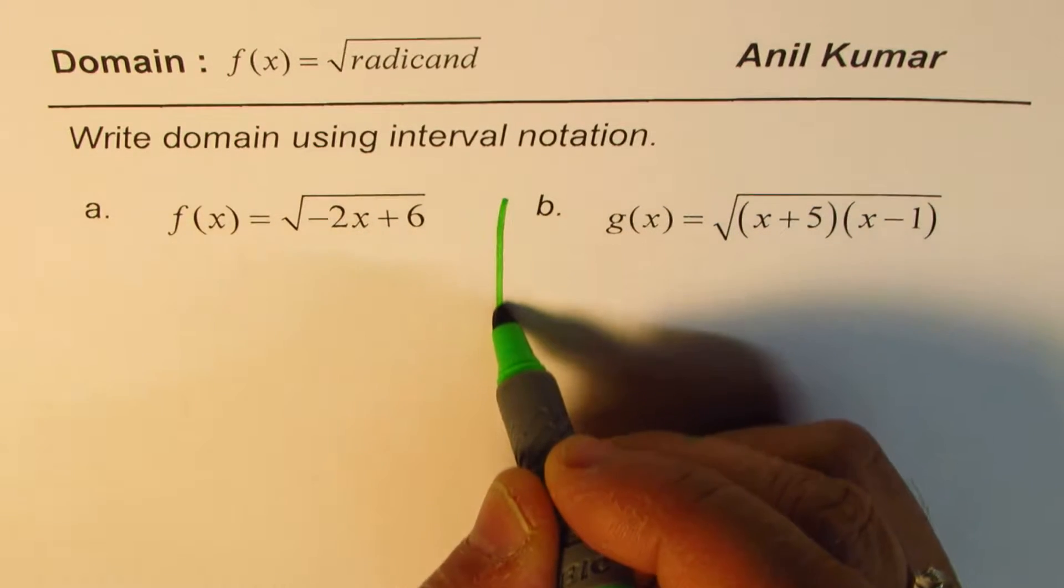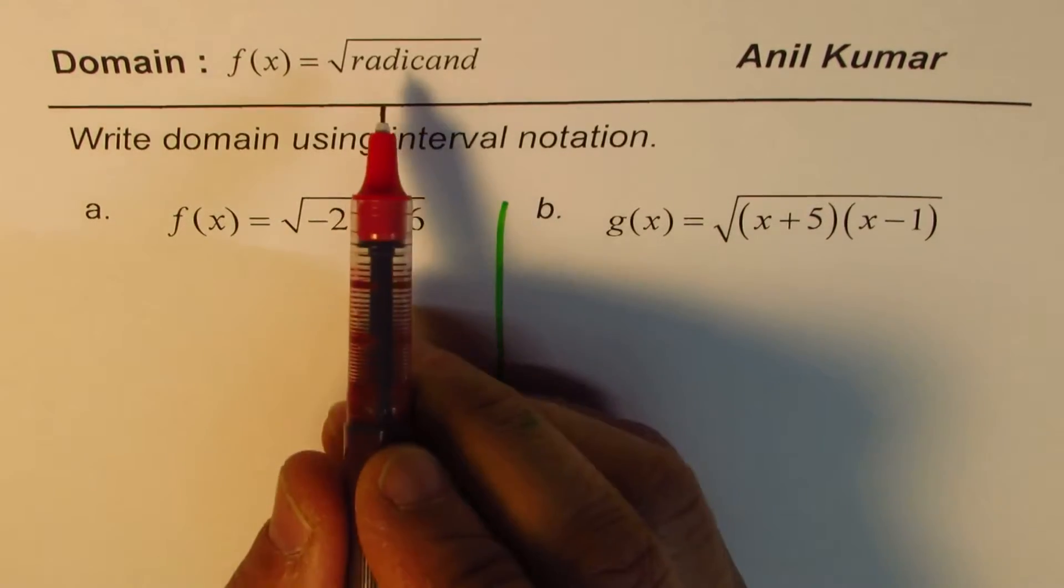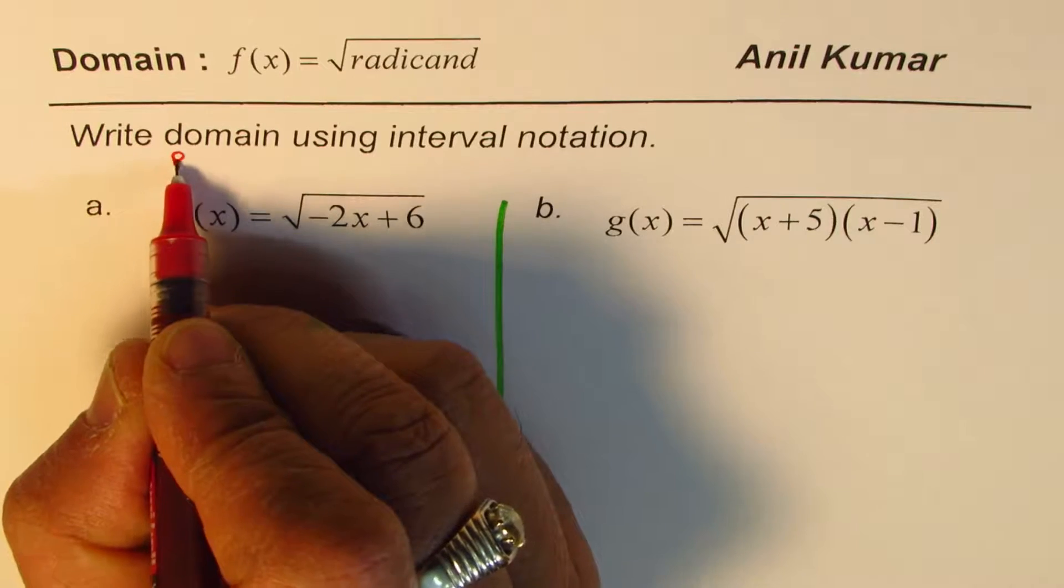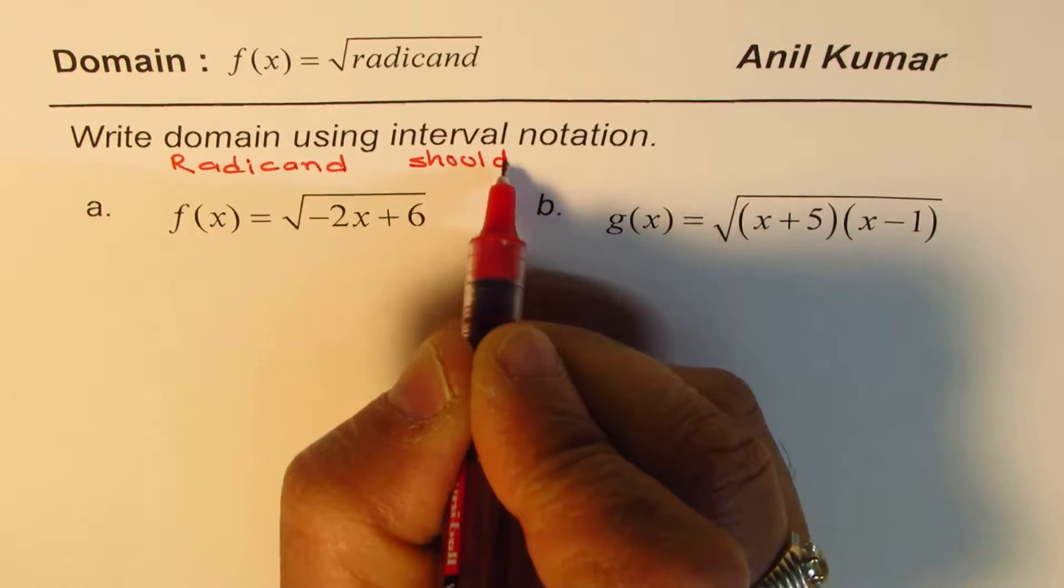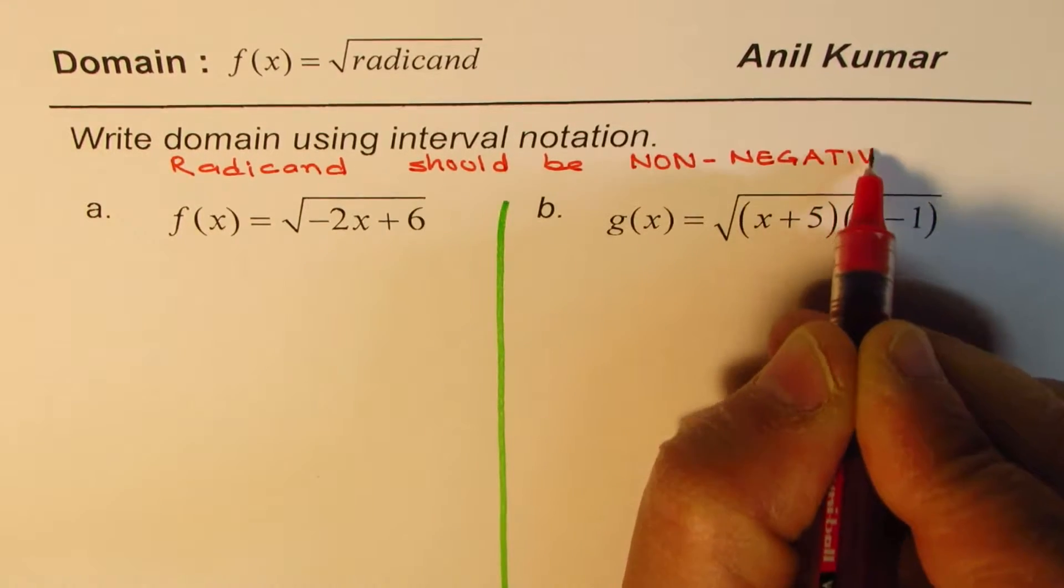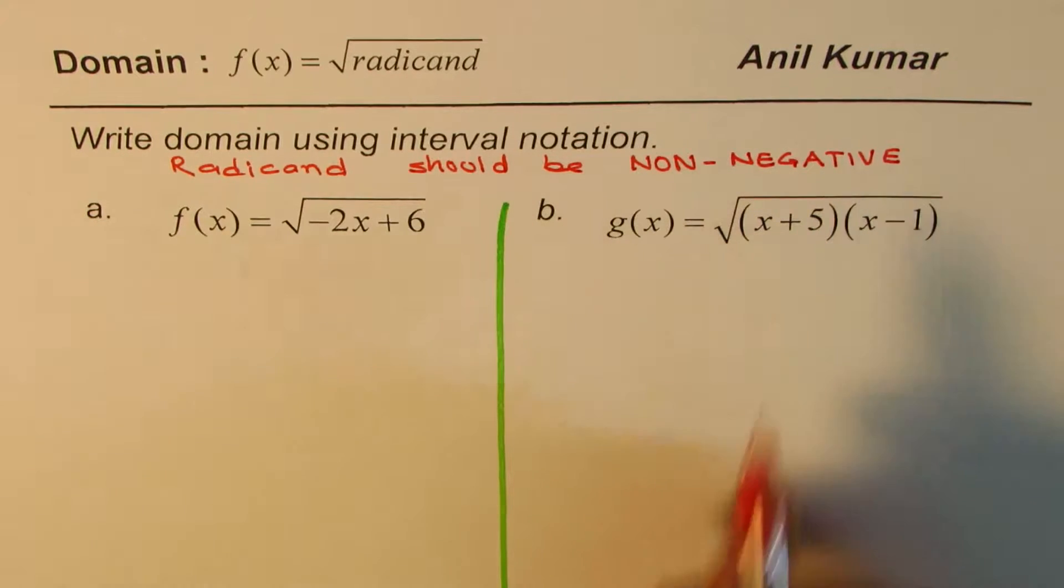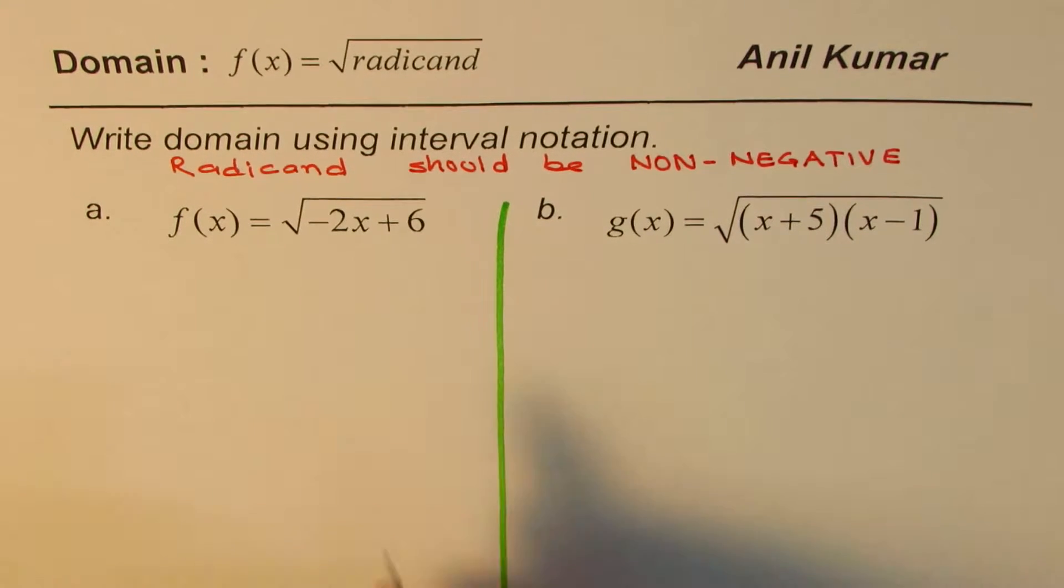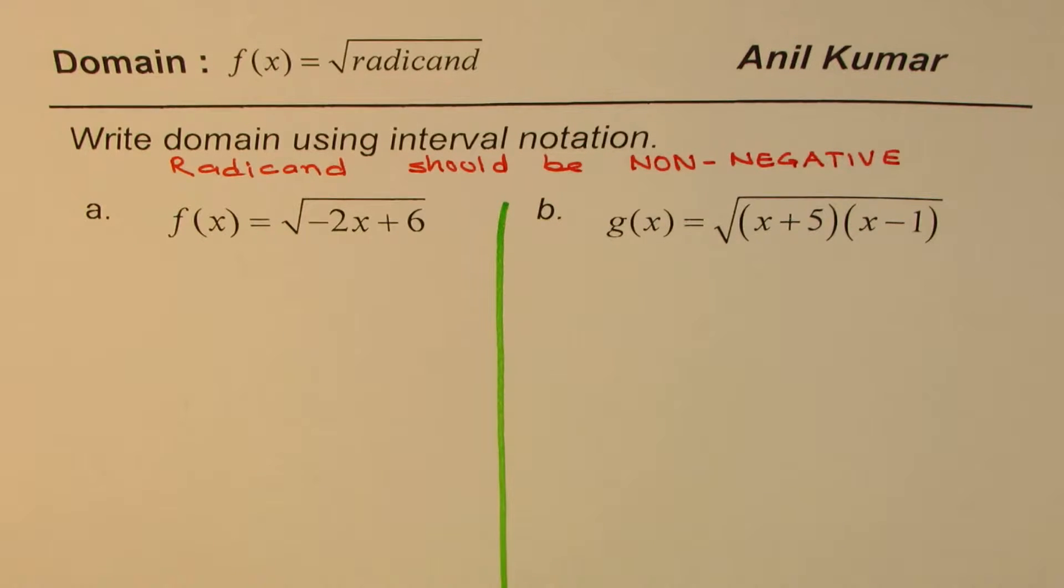You can actually pause the video, answer the question, and then look into my suggestions. The concept here is that whenever you're working with radical functions, the radicand should be non-negative. Non-negative is better than saying positive since we want to make sure that it could be 0 or positive. Writing that radicand should be positive is not incorrect, but non-negative is better.